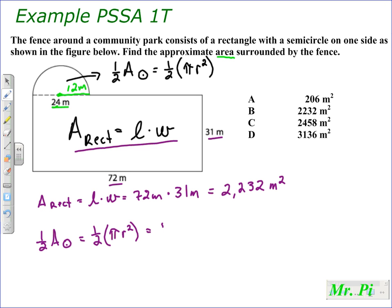So when we substitute in, we don't want to substitute in the 24, we want to substitute in the 12 meters. And we want to square that, and we want to multiply that by pi.